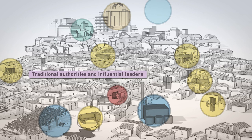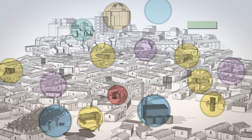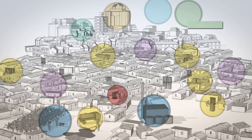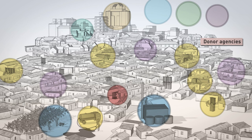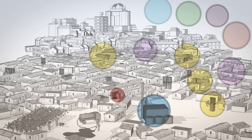Next to the formal state actors, you will often find traditional authorities and influential leaders, to whom people may be more willing to listen. You will also find non-governmental organizations active in sanitation, like NGOs or CBOs, and also academic institutions, who often have an important advisory role. And finally, last but not least, you have the international donors, which have an important decision-making power, and in some countries are literally leading the fecal sludge management agenda.